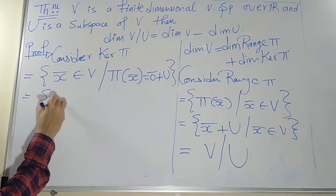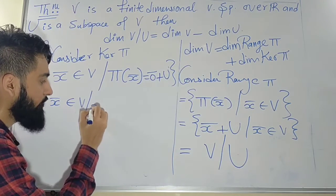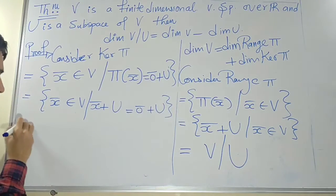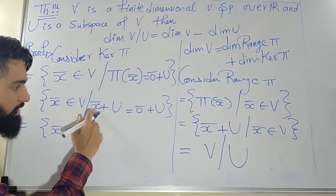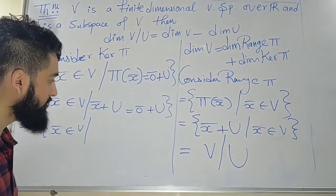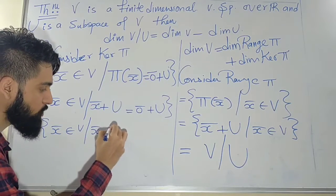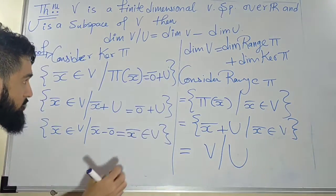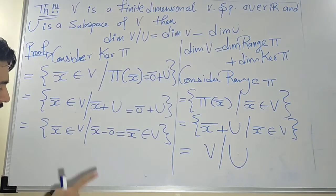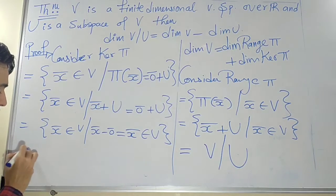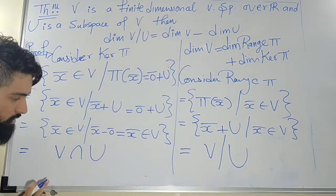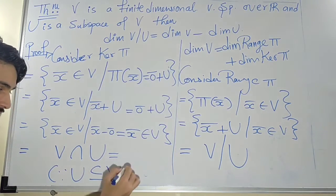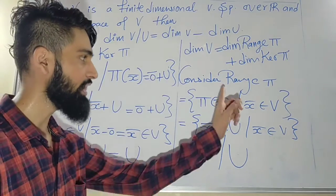The kernel contains all x in V such that x plus U equals zero plus U. Two cosets are equal if and only if the difference of the representatives lies in U — that is, x minus zero equals x must be inside U. So the kernel of π contains all elements from V that are inside U, which means kernel of π equals U, since U is a subspace and hence a subset of V.